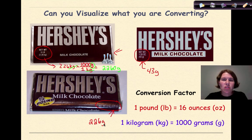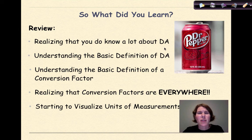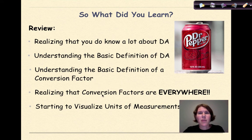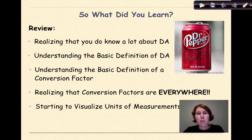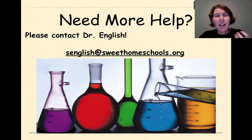Recognizing that conversion units exist is quite handy. So what did we learn in this tutorial? We realized that you actually do know a lot about dimensional analysis, that it's everywhere, and you've used it in your life whether you realized it or not. We looked at the basic definition, talked about how to use a conversion factor, and started to visualize units of measurement. As we can see on this Dr. Pepper can: 12 fluid ounces equals 355 milliliters of happiness. Need more help? Feel free to contact me — I'm Dr. English. Hope this helped. Have a great day.